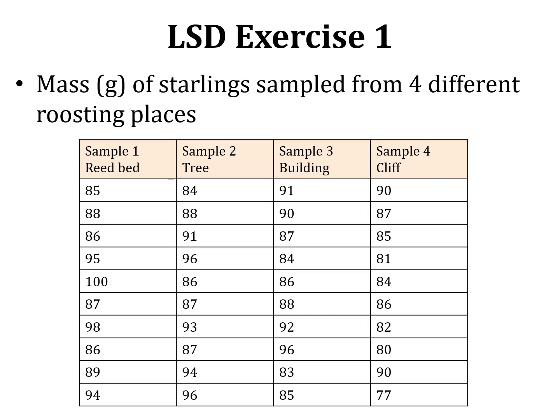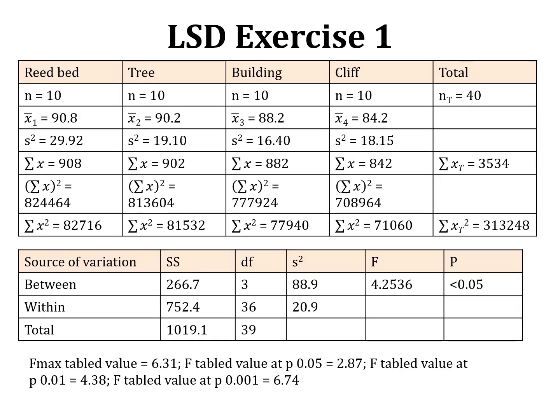Exercise number one involves starlings sampled from four different roosting places: reed bed, tree, building, and cliff. Descriptive statistics and the ANOVA summary table are provided and can also be used as an ANOVA exercise. The mean values are 90.8, 90.2, 88.2, and 84.2, and ANOVA tells us there is a significant overall difference. Now we need to figure out which means are specifically different from each other.